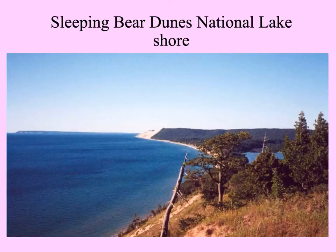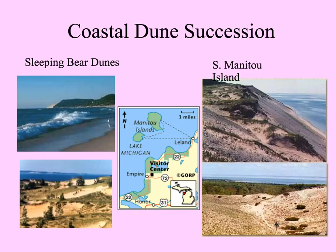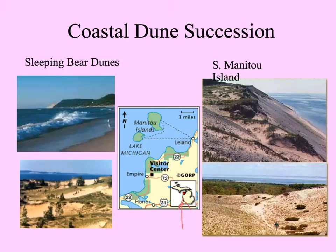Here's the Sleeping Bear Dunes National Lakeshore in the northern lower peninsula of Michigan on the northwest side. You can't tell from this picture, but they're about 250 feet tall. On the map you can see the dunes on the shore of Lake Michigan, and out in the lake are two islands — the Manitou Islands. The Indian legend says they're made from a mother bear and her cub. On the shores of South Manitou Island, the dunes are sites of primary succession.